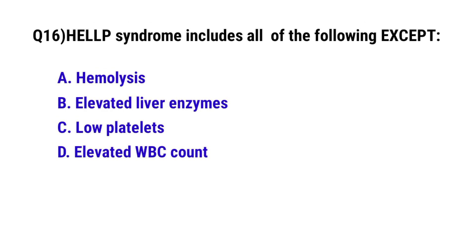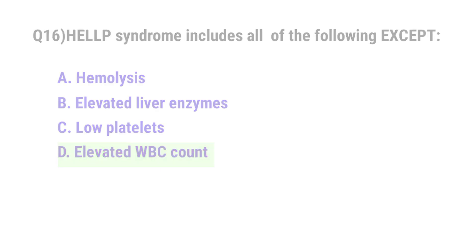Question No. 16: HELLP syndrome includes all of the following except? The correct option is D: Elevated white blood cell count.